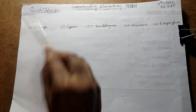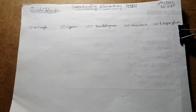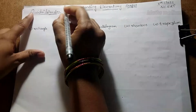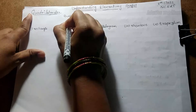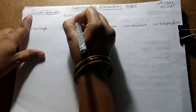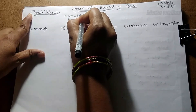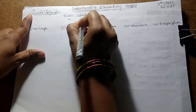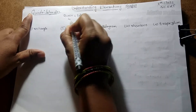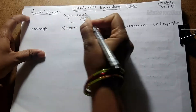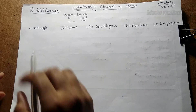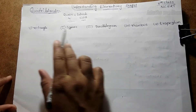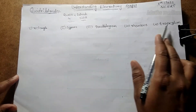The topic is Quadrilaterals. Quadrilaterals — the name itself tells us: 'quadri' means 4 and 'laterals' means sides. So, a 4-sided polygon is also called a quadrilateral. Let's see how many types of quadrilaterals we have: rectangle, square, parallelogram, rhombus, and trapezium.